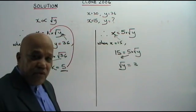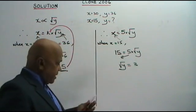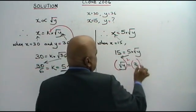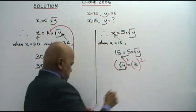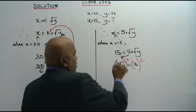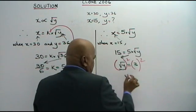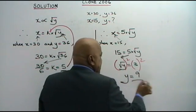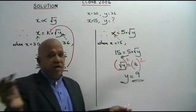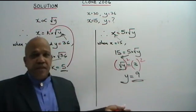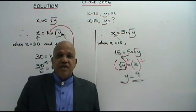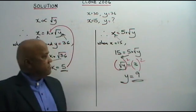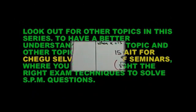We square both sides. When you square the square root of Y, you get Y. And 3 squared equals 9. So Y equals 9 — that is your answer. As simple as that. Thank you.